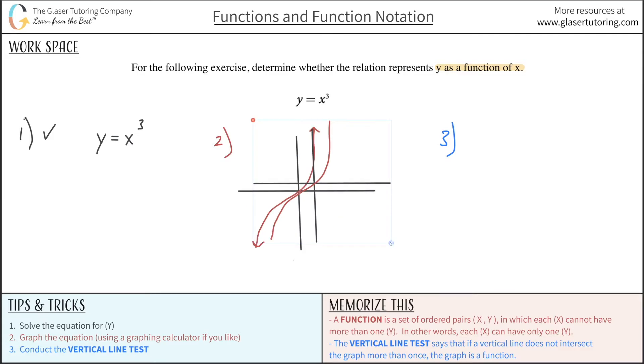So let's just copy this. I'll put it over here. The vertical line test tells us that if a vertical line that's drawn does not intersect the graph more than once, meaning it intersects at none or once, the graph is then a function.